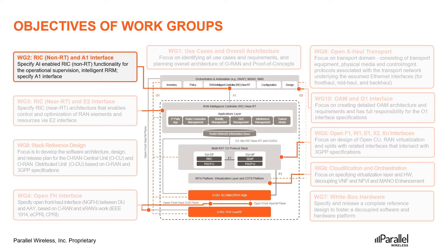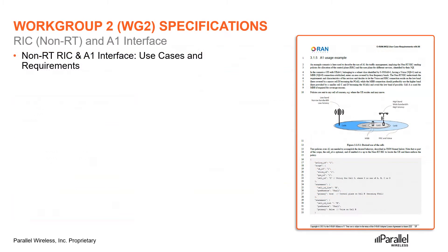Let us start by looking at specifications and reports approved by WG2. The first one is the non-RT-RIC and A1 interface use cases and requirements technical specification. This document describes the RAN optimization and control-related initial use cases that have been approved within ORAN workgroup 2. The purpose of these use cases is to help identify requirements for ORAN-defined interfaces and functions, specifically non-RT-RIC function and A1 interface, eventually leading to formal drafting of interface specifications.